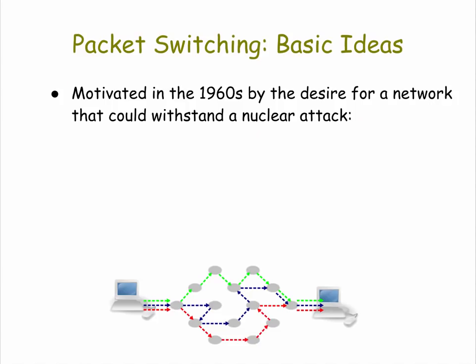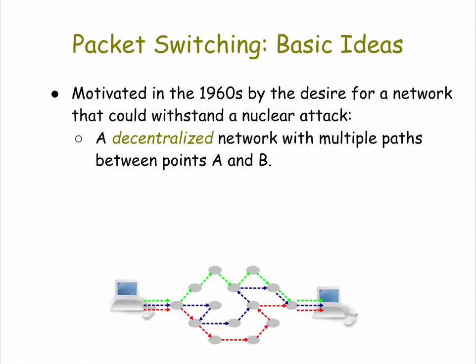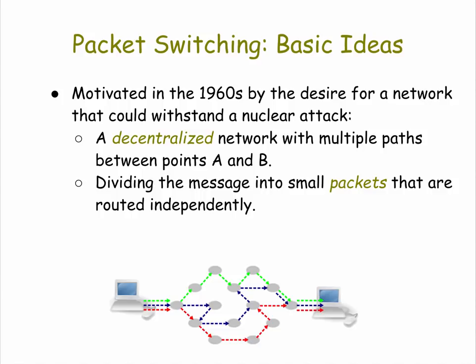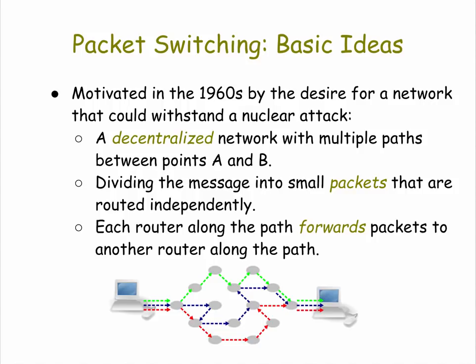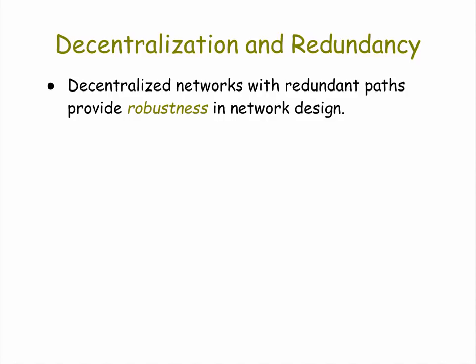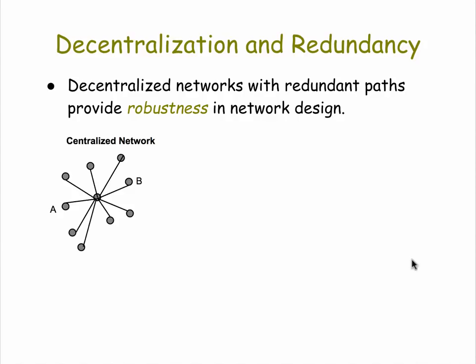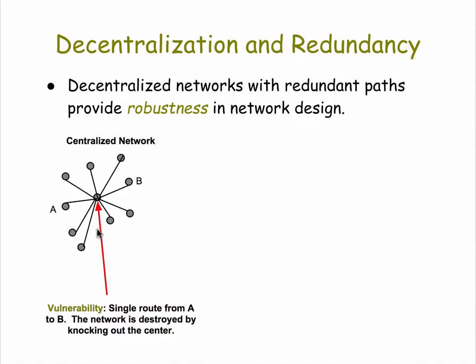Why is this protocol used? The story goes back to the Cold War in the 50s when we were worried about nuclear attacks from enemies like the Soviet Union. The desire was to create a network architecture that could withstand a nuclear attack or a similar disaster, which is why the idea came up for a decentralized network with multiple paths between any two points A and B. You would simply divide the message into small packets and route them independently, where each router along the path forwards the packets to another router. Compare a centralized network where all messages have to go through a central server or router — if that router gets knocked out, you can no longer communicate on that network. You've broken the entire network.